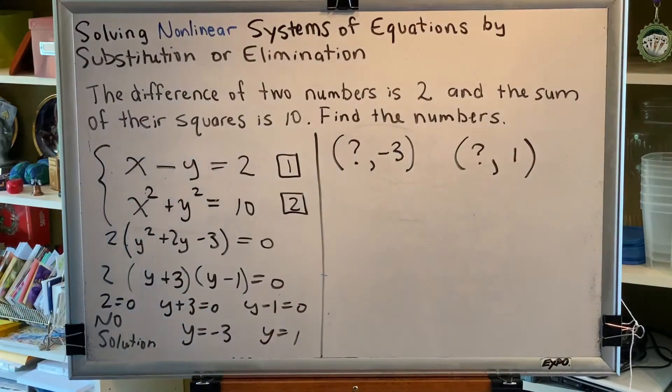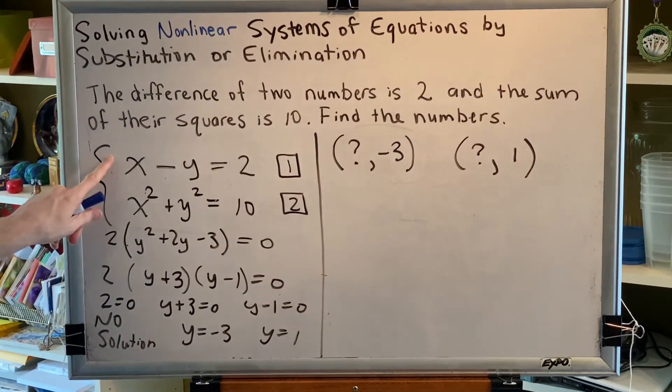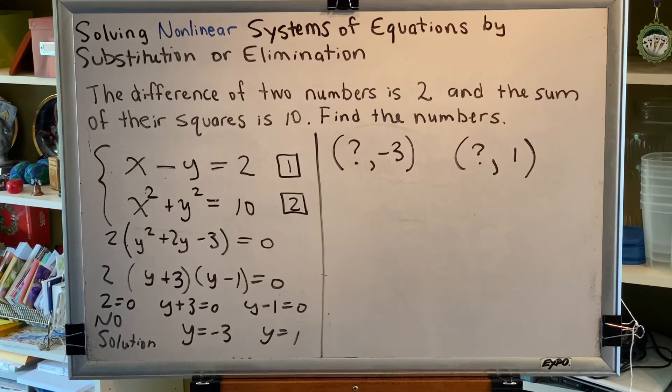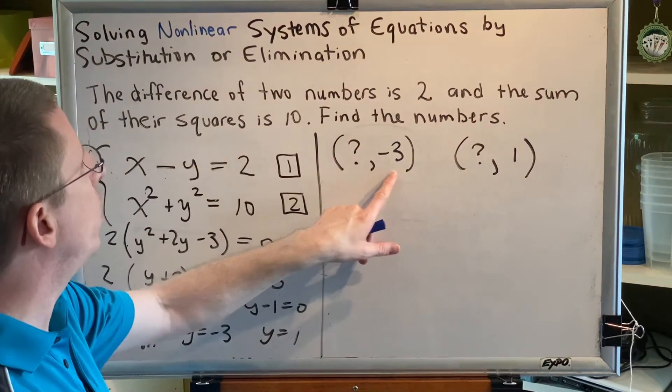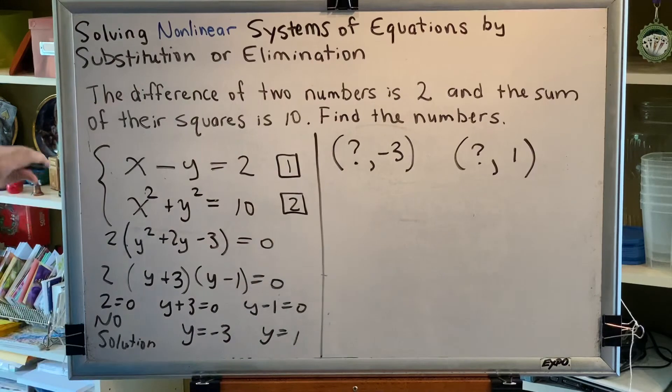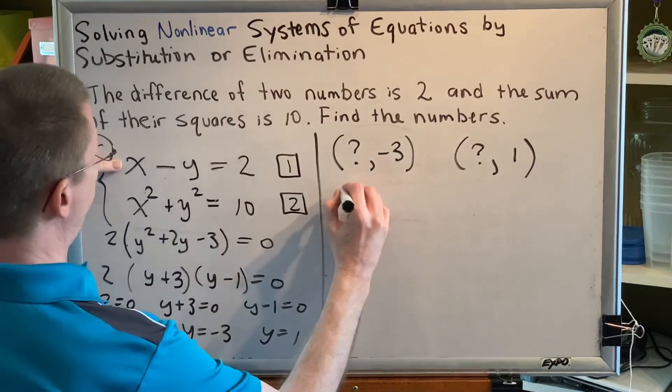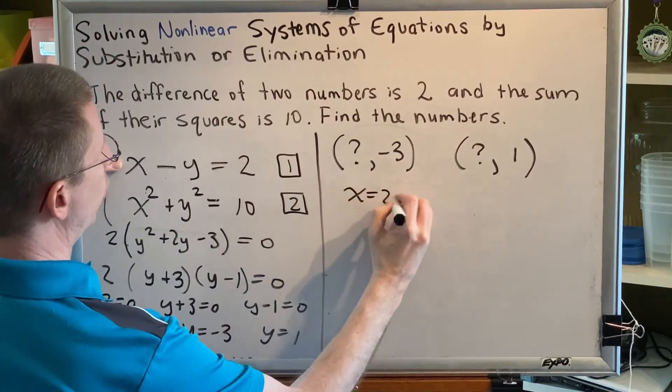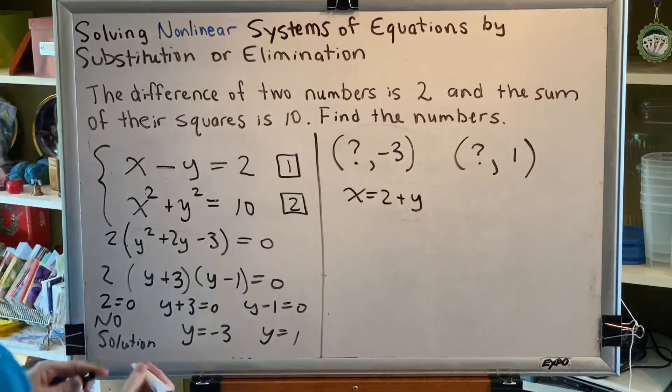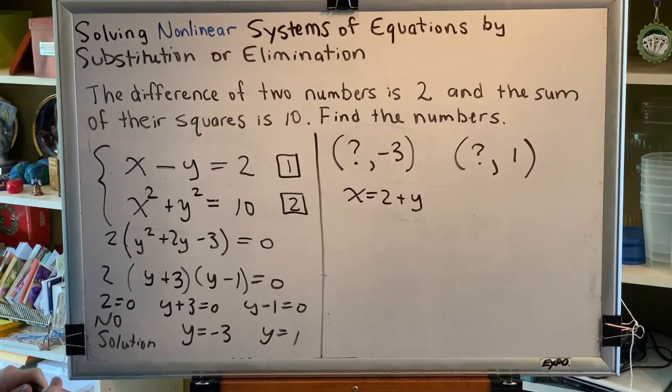And we do that by plugging y into any equation anywhere in our solution that still contains x and y in it. Well, if we think about it, we know y. What we do not know is x. And earlier in our solution, we wrote that x was equal to 2 plus y. So let's use that equation to find what x is.